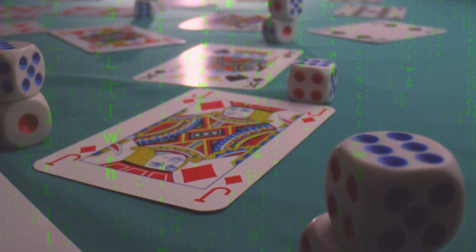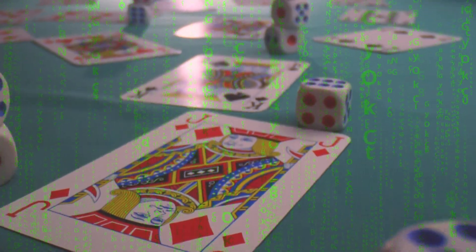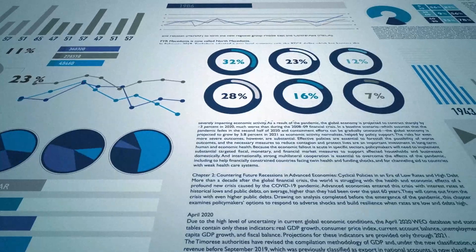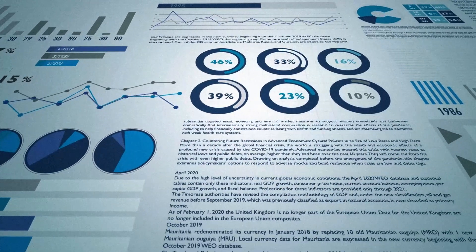Statistical arbitrage algorithms. These clever systems are like the card counters of the stock market. They analyze historical patterns and relationships between different securities, looking for tiny price discrepancies they can exploit.